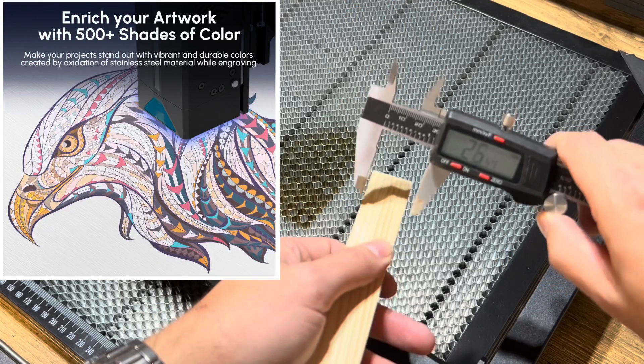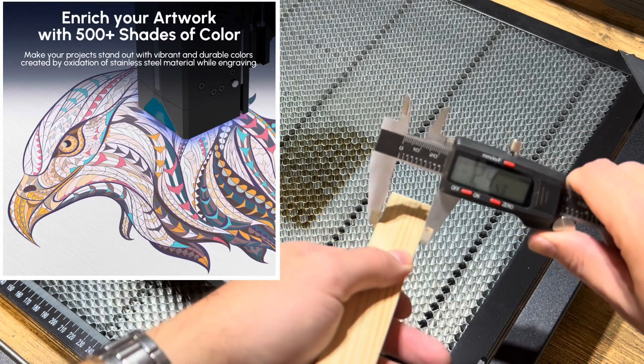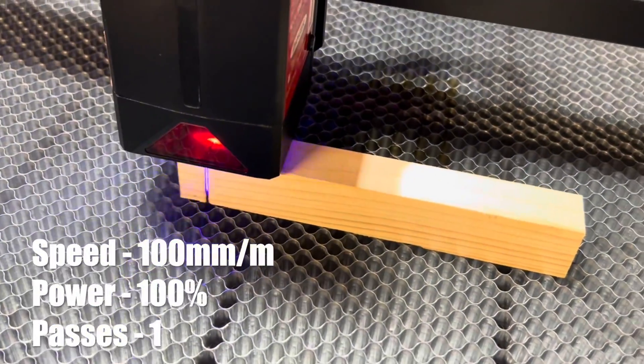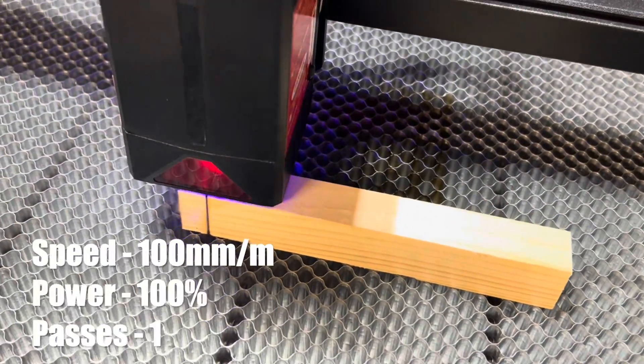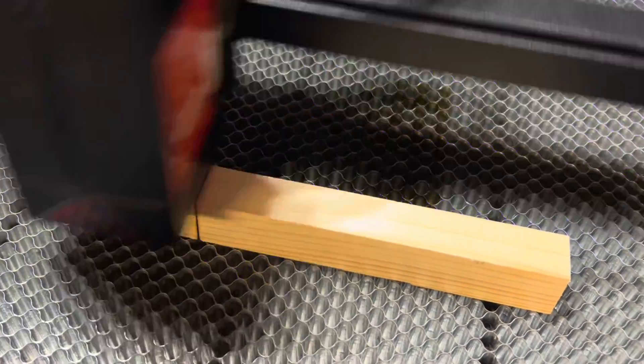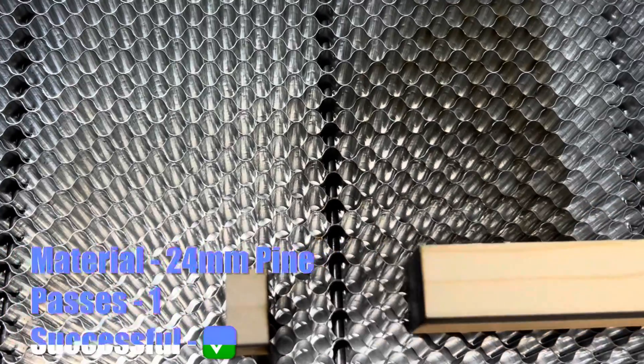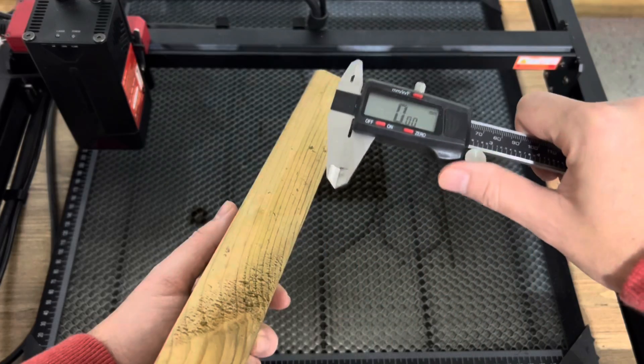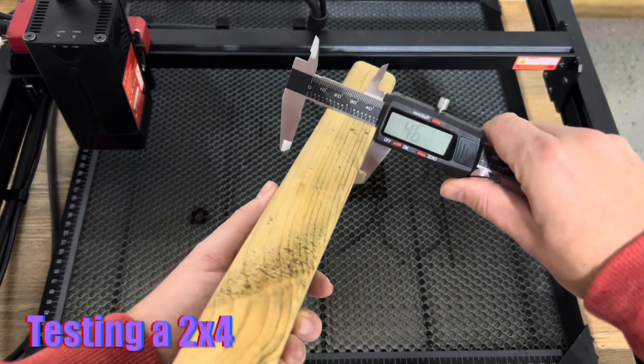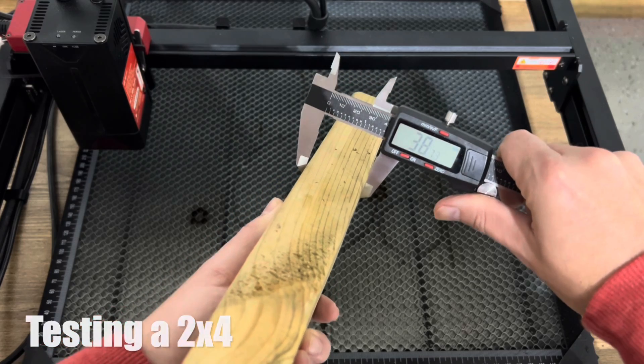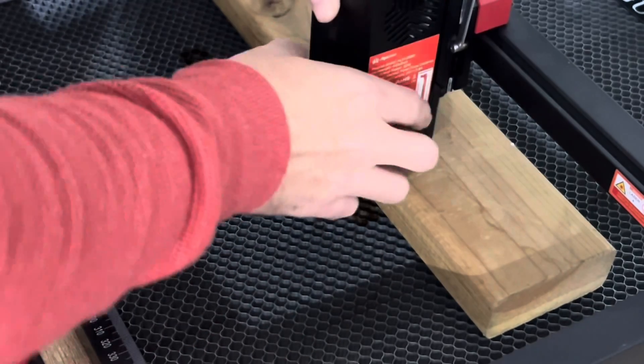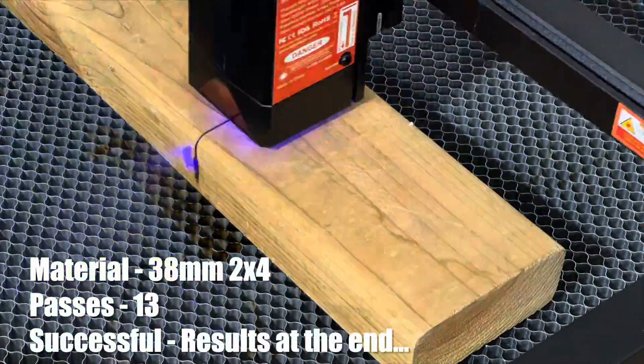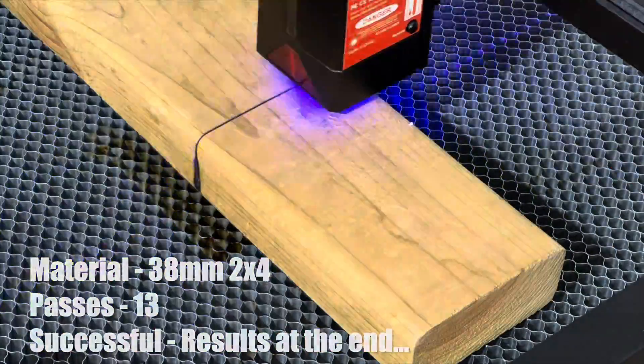You can also make your project stand out by engraving up to 500 plus shades of color. Watch until the end to see the final results of the 2x4 and don't miss out as I put together a variety of eight builds with this machine the first couple of days I had it.